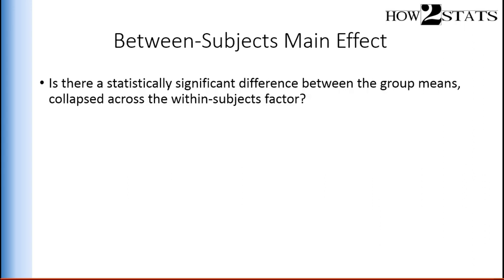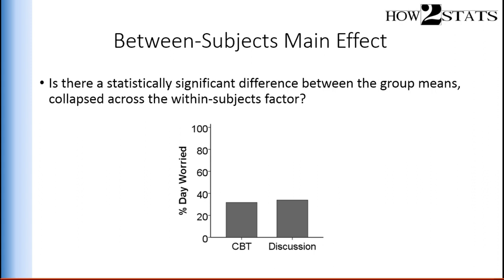The between-subjects main effect answers the following question: is there a statistically significant difference between the group means collapsed across the within-subjects factor — irrespective of the time at which the person's anxiety was measured? This is what that effect would look like in a bar chart: CBT collapsing across pre-treatment, post-treatment, and follow-up, averaging those means into one mean for the CBT group, and doing the same for those who received discussion therapy. So two levels in the between-subjects factor.